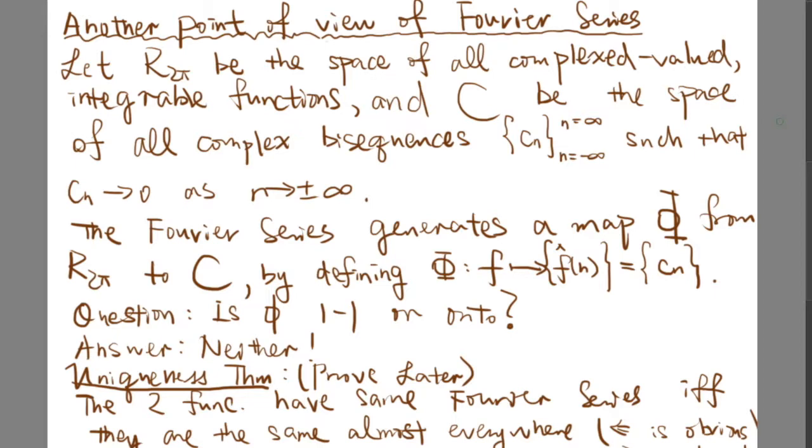Next, we are going to discuss another point of view of Fourier series. To keep the notation simple, we will define two spaces. First is R2π, the space of all complex-valued integrable functions. And C will be the space of all complex sequences cn with n running from negative infinity to positive infinity, such that cn tends to zero as n tends to positive or negative infinity.